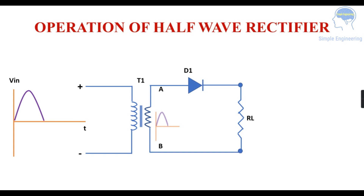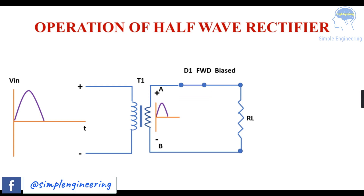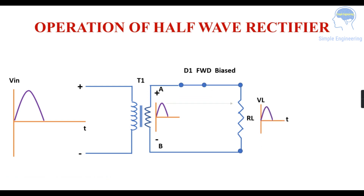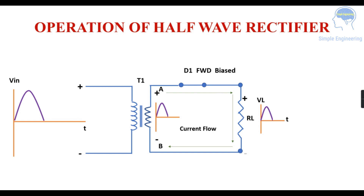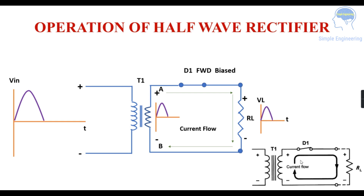In the operation of the half-wave rectifier, diode D1 is in forward biased condition, acting as a closed switch. The input voltage VIN is stepped down in the secondary. Because the diode is forward biased and acts as a closed switch, current flows from point A to point B — through the diode and then through the resistance — giving an output during the positive half-cycle.